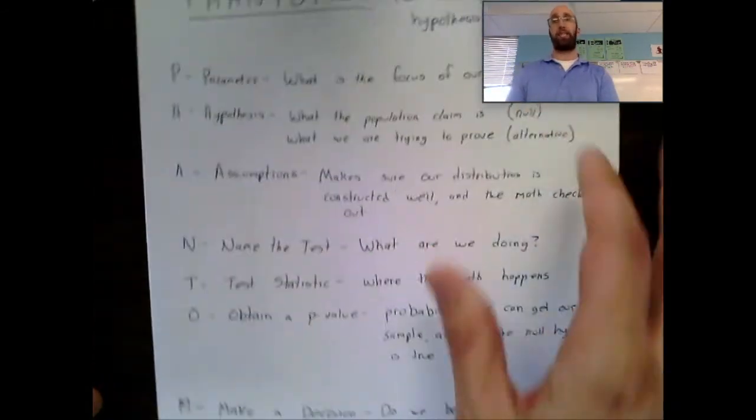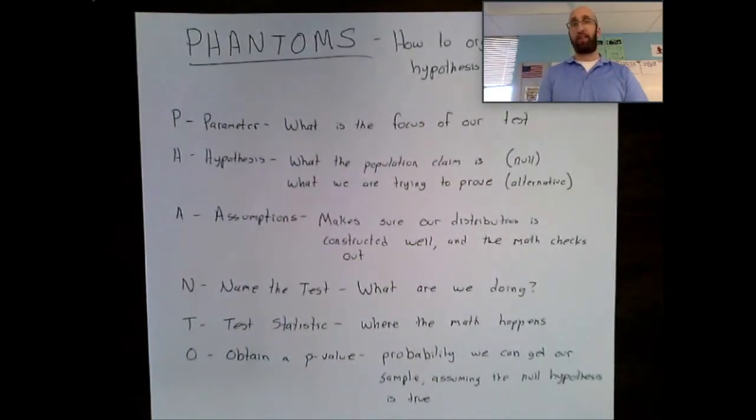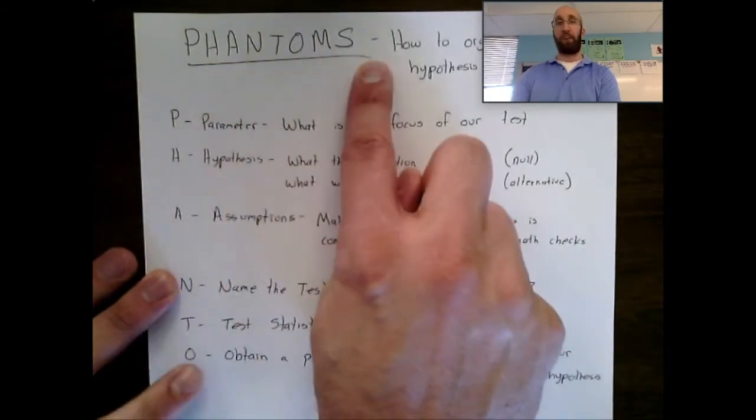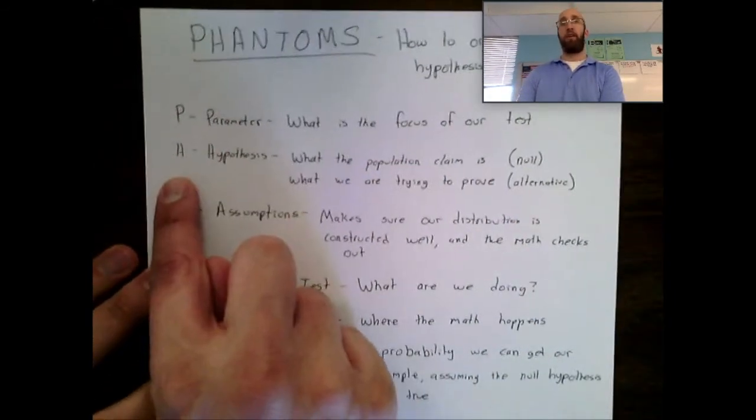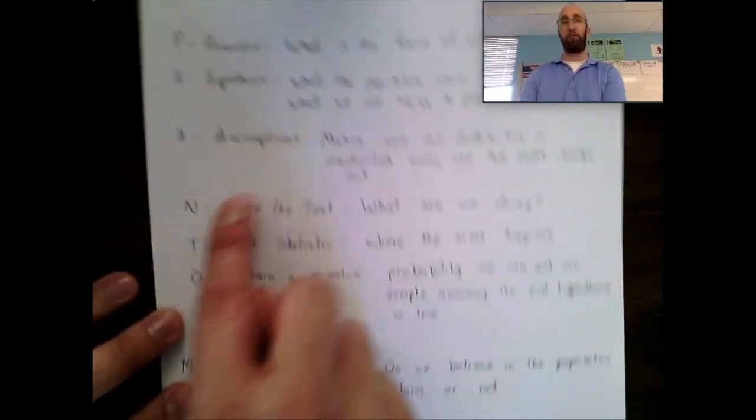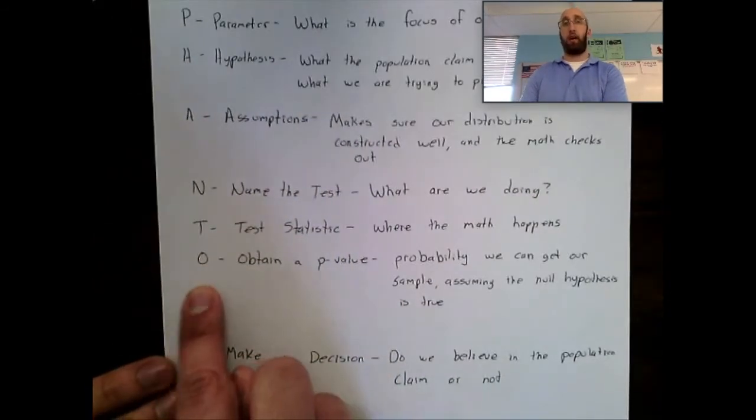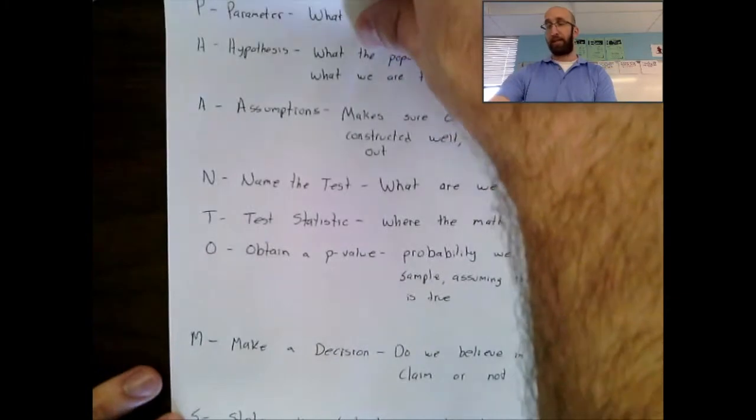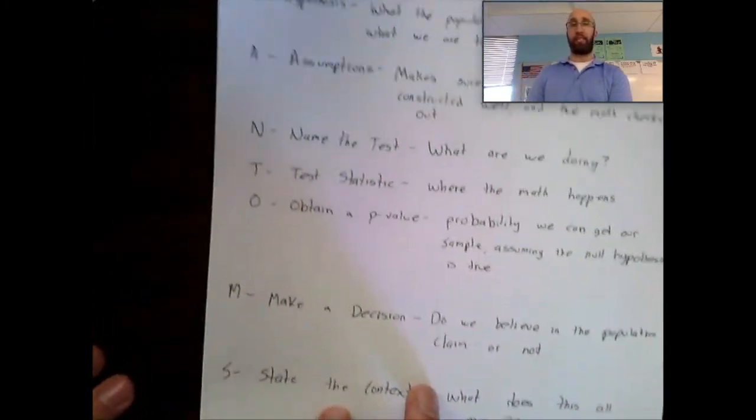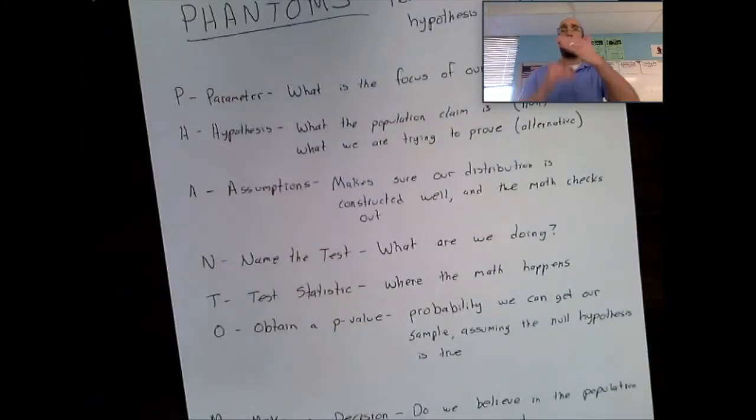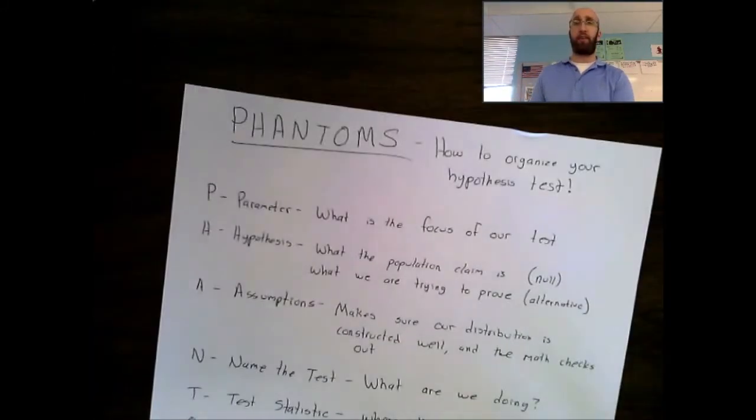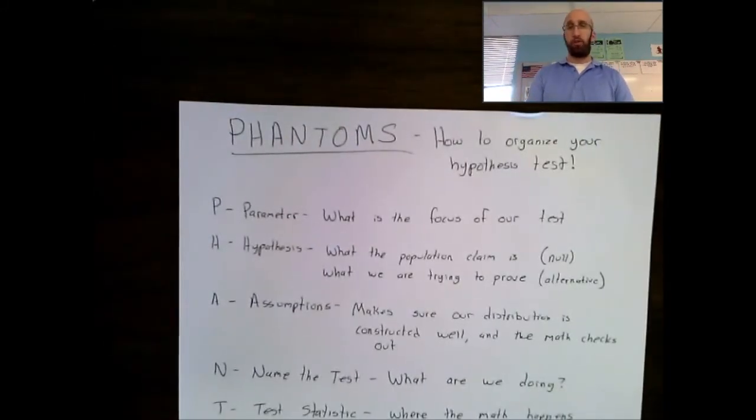Those are all of my pieces of a good hypothesis test. Again, we're going to follow through on phantoms. Parameter, then hypothesis, then assumptions, name what you're doing, then do the test, obtain a p-value, make a decision, and then finally state your context. If you follow through all those pieces, you're going to have a well-constructed hypothesis testing problem, and you should do well on this stuff.